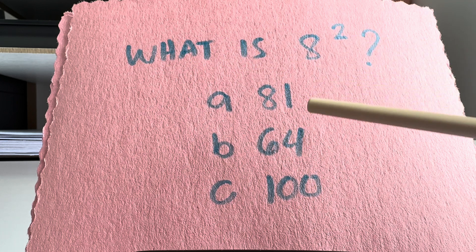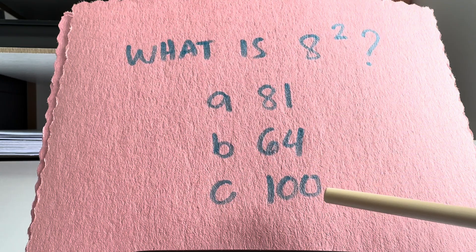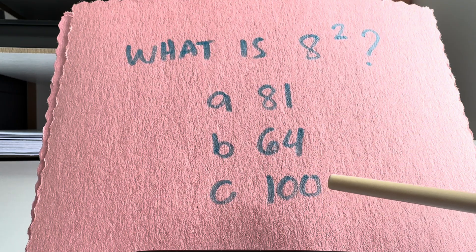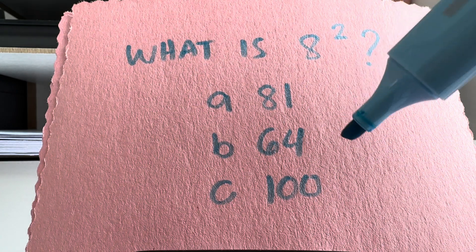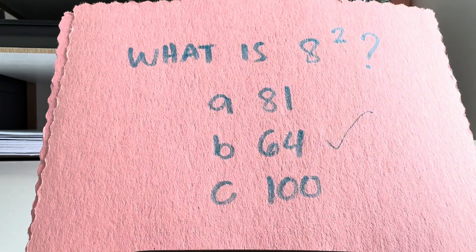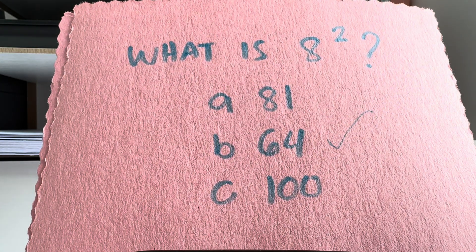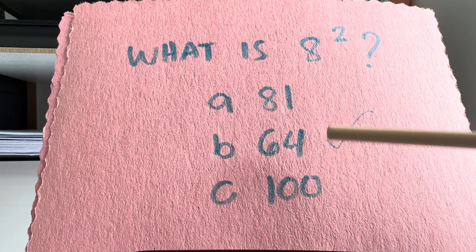Can you answer: what is 8 squared? Is it letter A, 81? B, 64? Or letter C, 100? And the correct answer is letter B, 64. 8 squared is equal to 64.